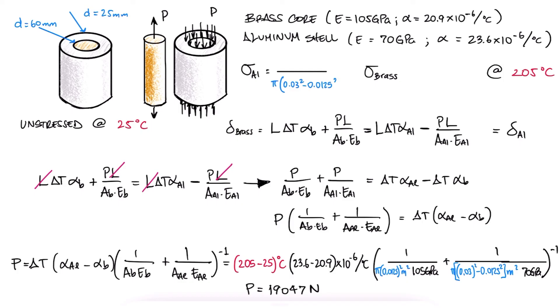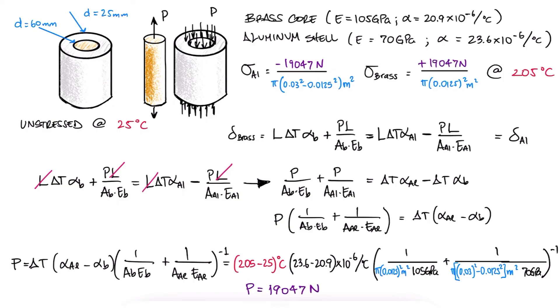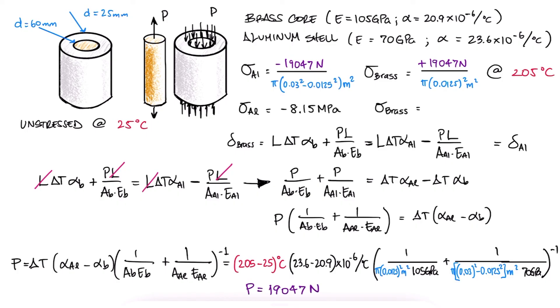With the area of the aluminum and the brass, and knowing that the aluminum is being held back by the brass and therefore compressed, and that the brass is being further stretched by the higher thermal expansion of the aluminum, we find the two stresses we were looking for.